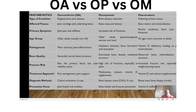The age groups affected: in osteoarthritis we have older adults, usually over 50 years. In osteoporosis, we also have older adults, especially post-menopausal women and men. Osteomalacia affects all ages, but is more common in adults.